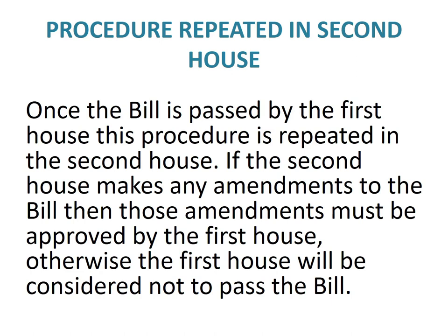A bill must be passed in the same form by both houses of Parliament before it can become a law. If the second house makes amendments to the bill, then the bill as amended by the second house must be sent back to the first house for it to vote on those amendments. In the first house, we don't go through all the stages again — the members simply vote on whether to pass the bill as amended by the second house. If the first house votes to pass it, then the bill has been passed by Parliament. If the first house votes not to pass it, then the bill does not pass and cannot become a law.